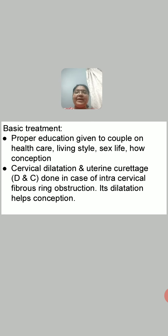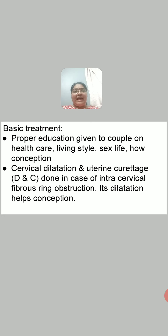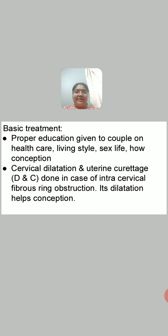If the woman is too lean or thin and her weight is below 45 kg, then ask her to put on weight — ask her to take more fatty food. Another example is anemia. If the woman has anemia, then anemia correction should be done using whatever method is suitable to the woman.